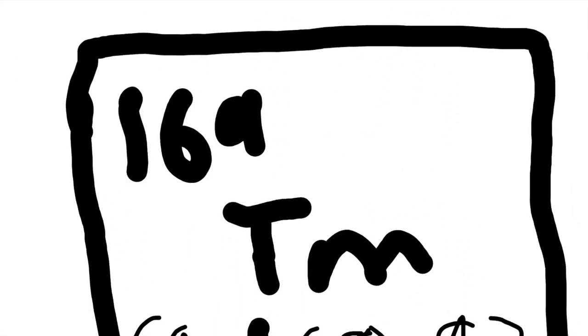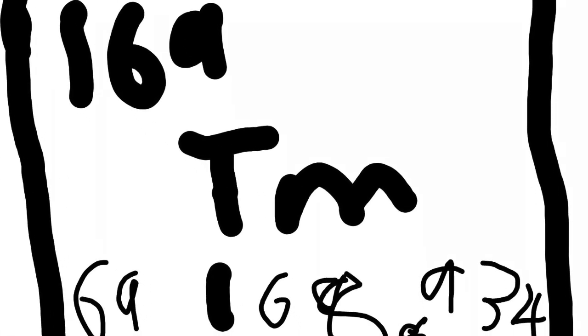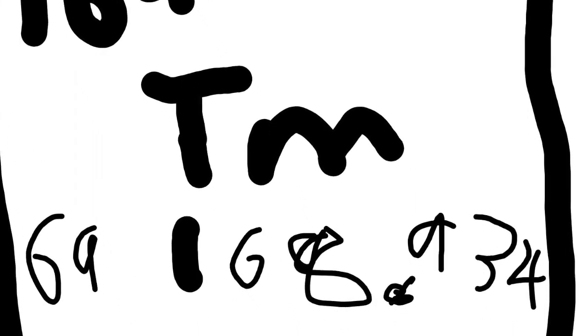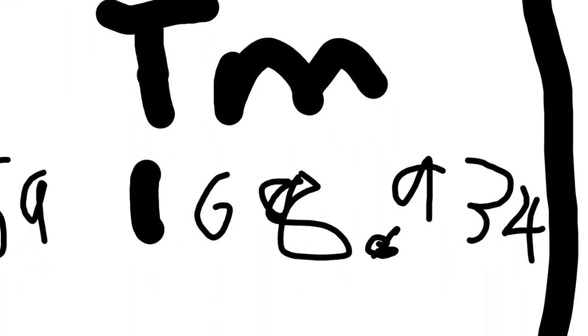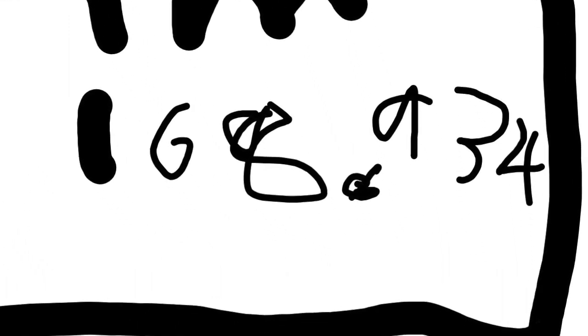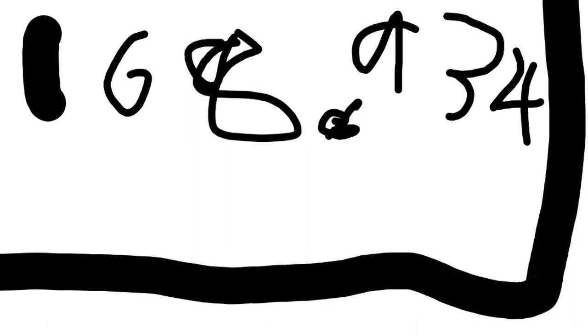Now, if you find a wacky number right below the giant chemical symbol — like, you know, it's got decimals and stuff — that's the average atomic mass number, which is the average weight of all the common isotopes of the element.